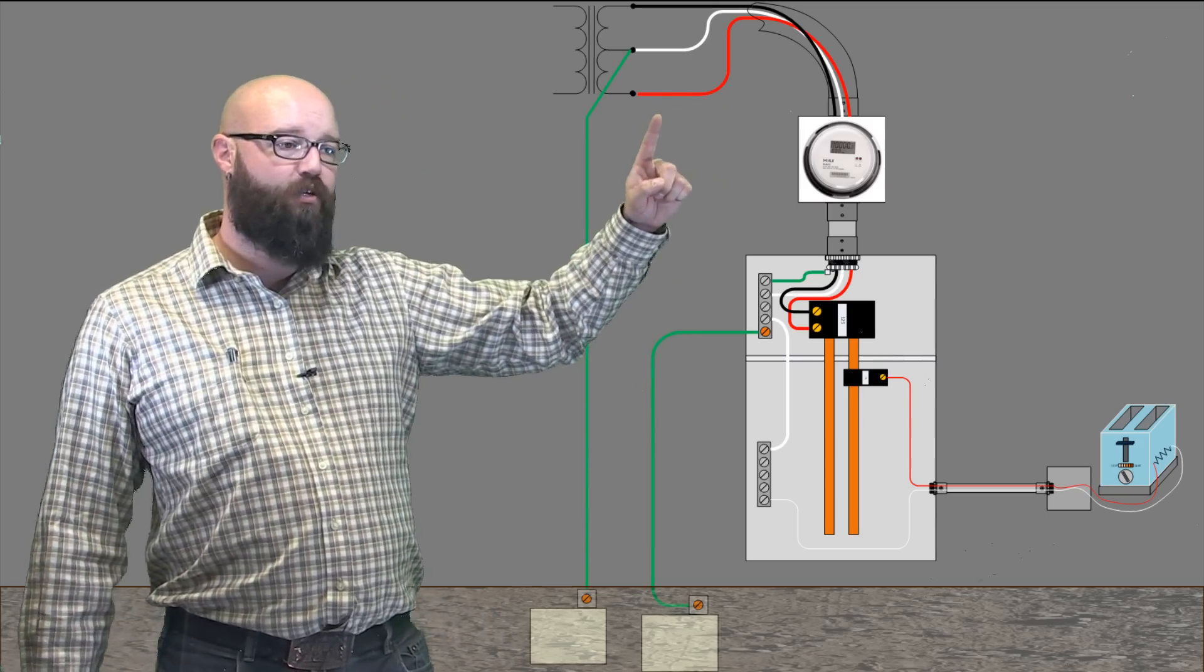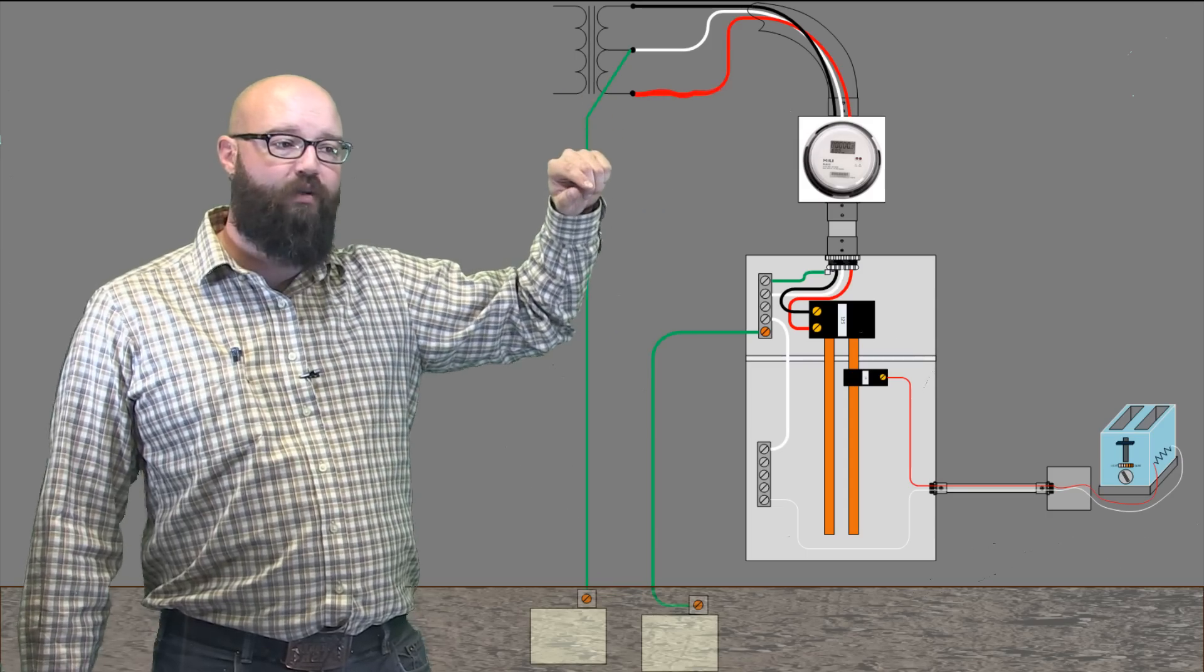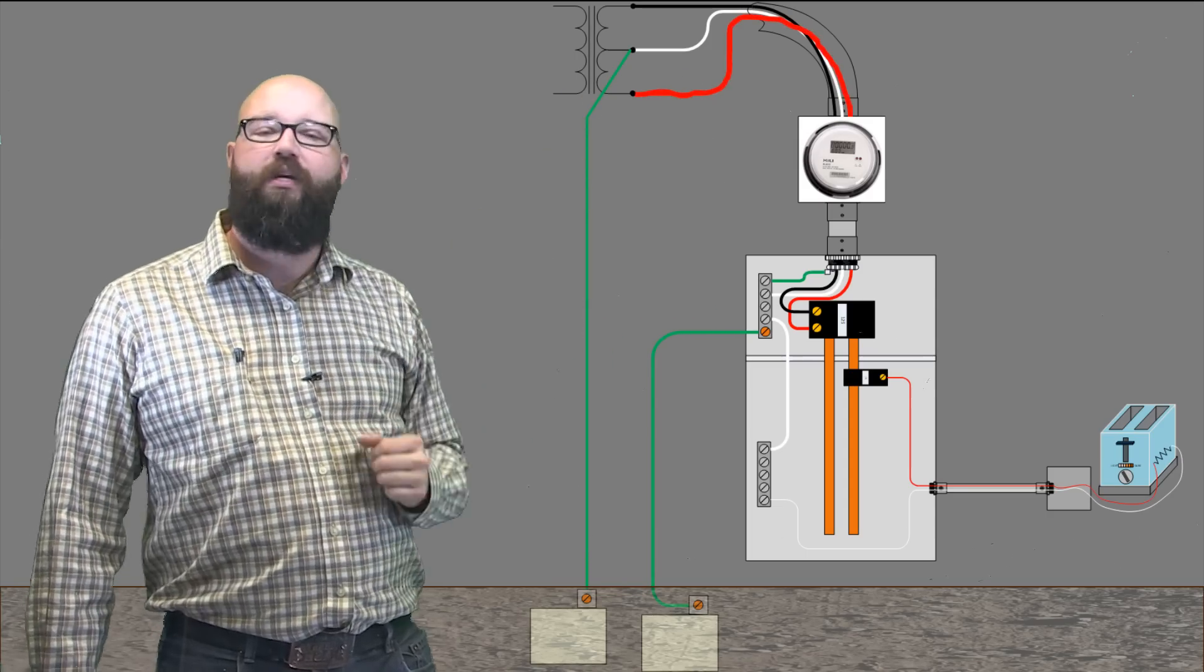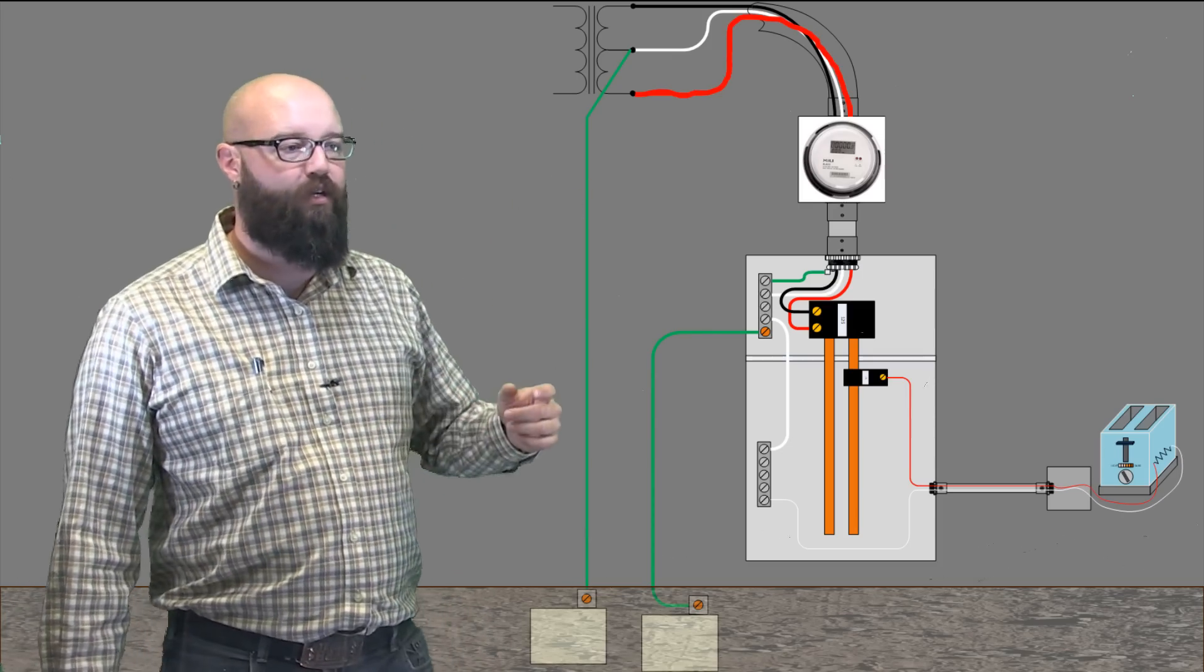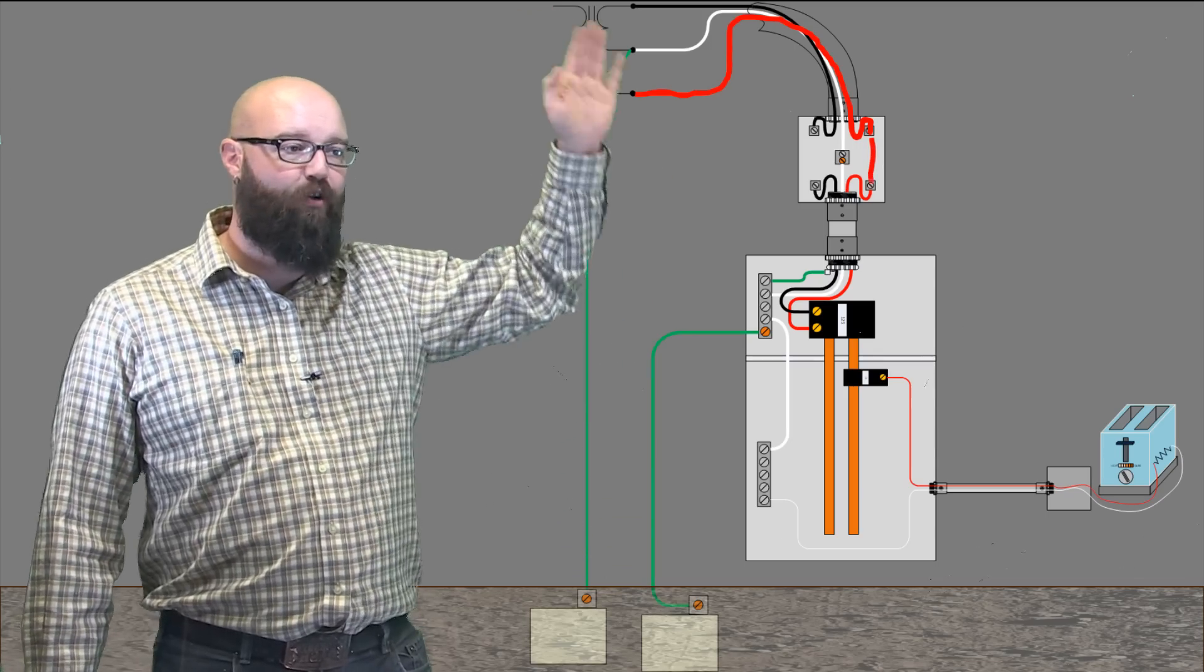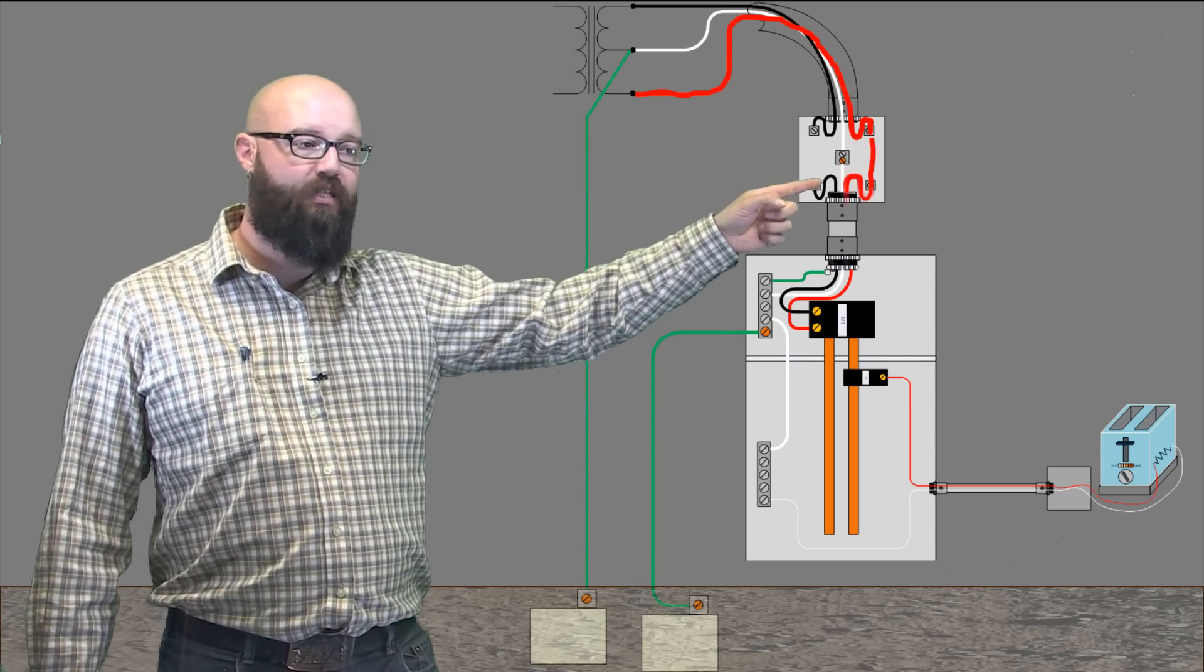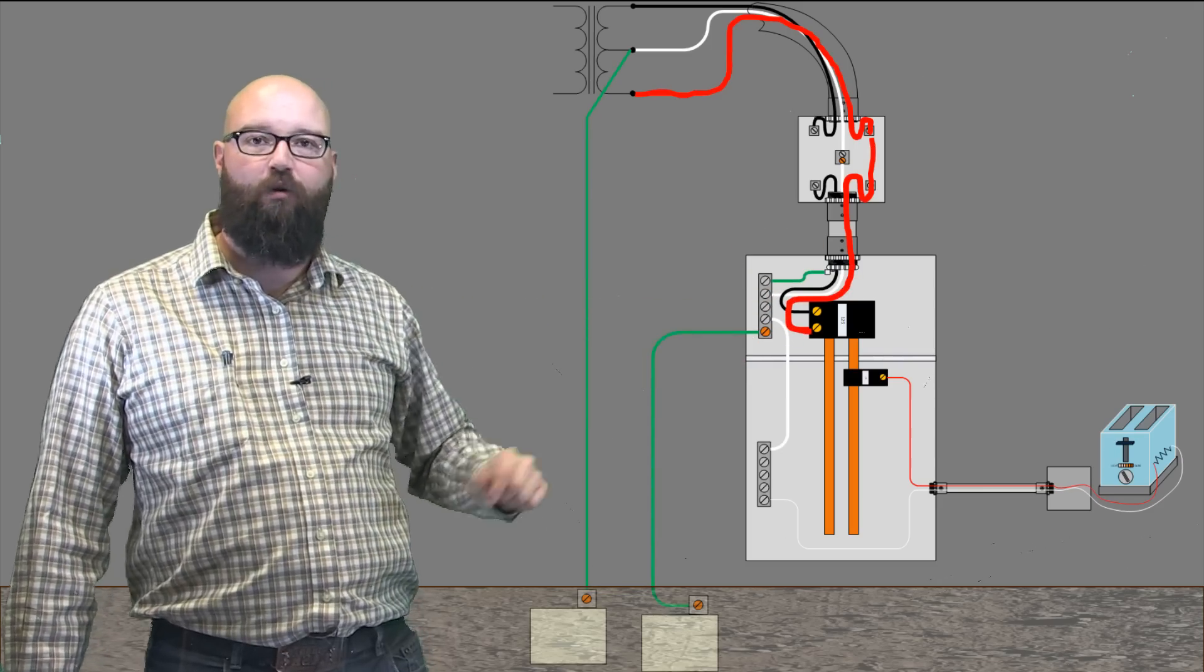So we'll start here. We're going to start at our line 2 on our transformer here, our red conductor, and we see as it's highlighted it makes its way down to the meter base. Now this meter base is what makes the physical connection between these two points right here. With that meter base in place, we have current flow through, and now we see it make its way down the conductor where it gets to our main service disconnect, our breaker.